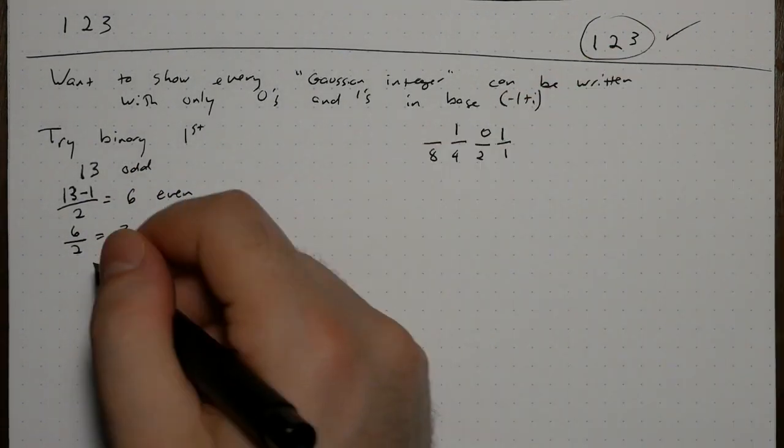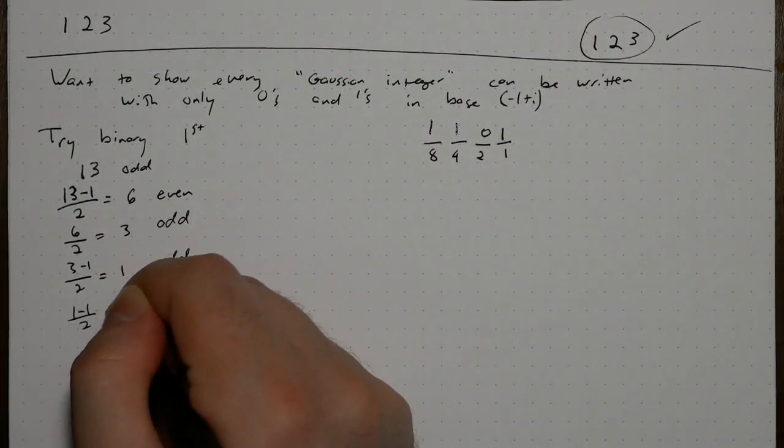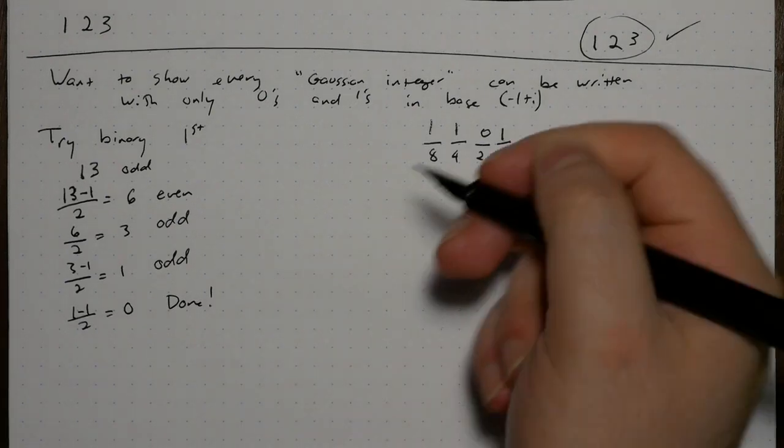We'll write down a 1. Subtract 1, divide by 2, and we get 1, which is odd. Write down a 1. Subtract 1, divide by 2, we get 0, which means we're done.